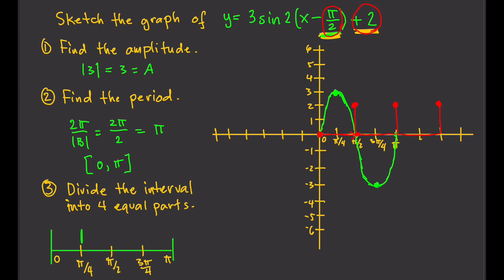We apply the same translation to every key point: pi over 2 units to the right and 2 units up. All five key points are relocated to their final positions, and then we connect the dots to produce the translated graph.